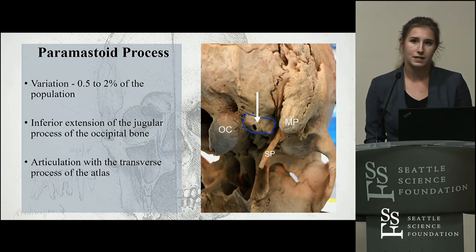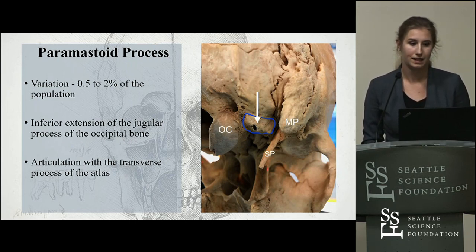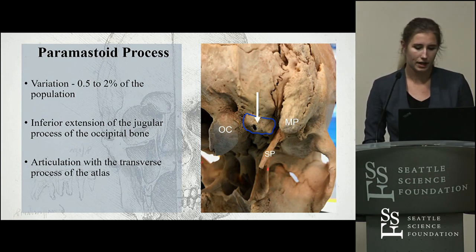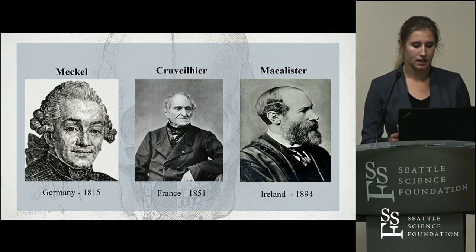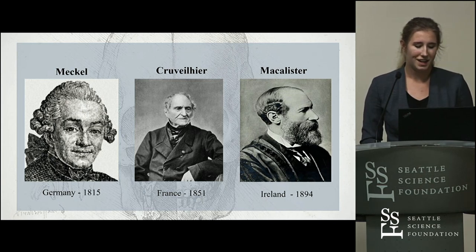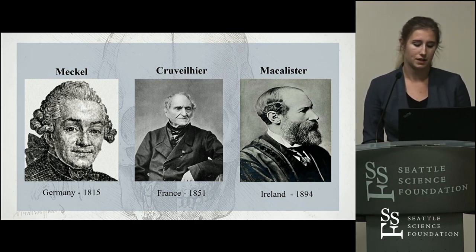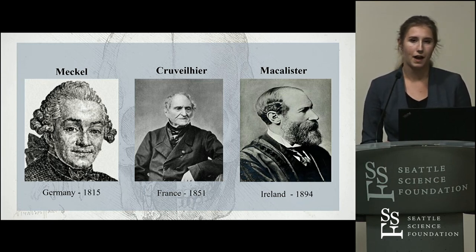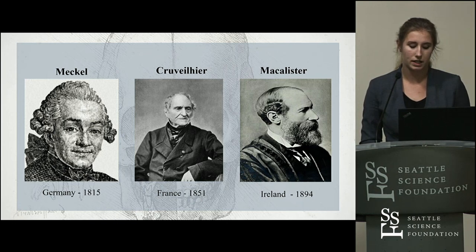When the paramastoid process is enlarged, it has a tendency to articulate or fuse with the transverse process of the atlas, which can potentially cause neck and head pain and decrease mobility of this area. In 1815, the paramastoid process was first described by Meckel. In 1851, Cuvierre elucidated the paramastoid process being able to articulate with the transverse process of the atlas. However, it wasn't until 1894 when McAllister defined the paramastoid process as an extension of the jugular process and documented articulation with the atlas.